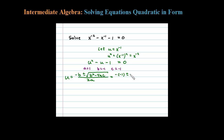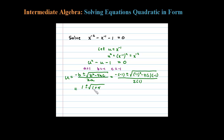Let's plug in: negative negative 1 plus or minus the square root of negative 1 squared minus 4 times 1 times negative 1, all over 2 times 1. Simplifying, we get 1 plus or minus the square root of 1 plus 4, all over 2, since negative 4 times 1 times negative 1 is positive 4.